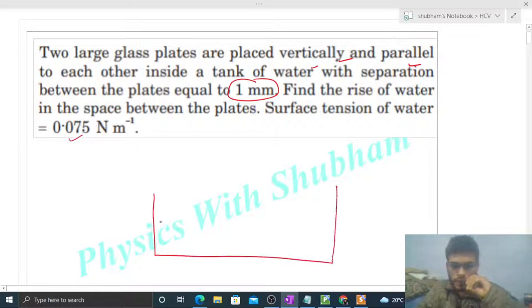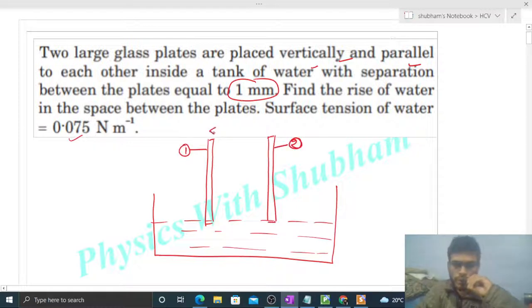So we have a water tank, something like this, and we have water in this water tank. Let's say plate one and plate two, and the separation between the two plates is given d is equal to 1 mm. So what will happen? Because of capillary action...